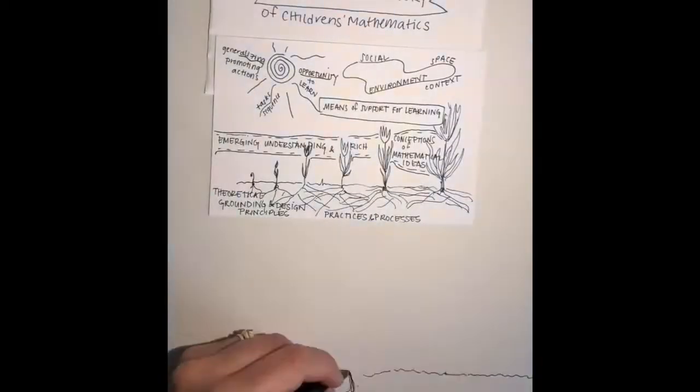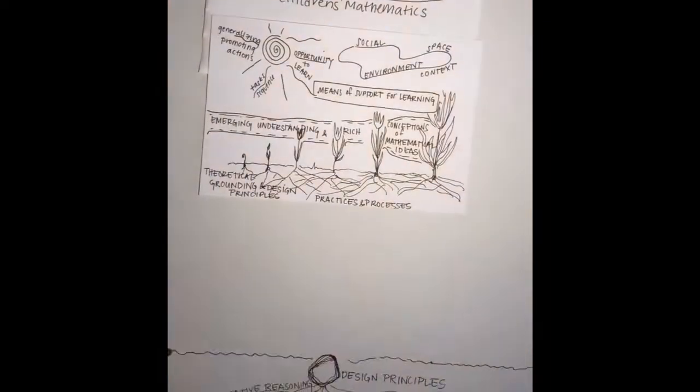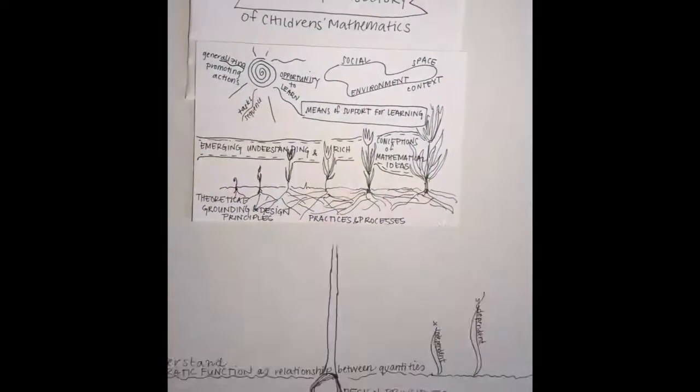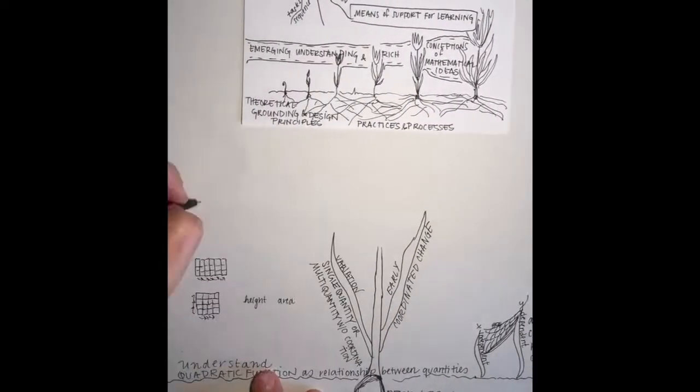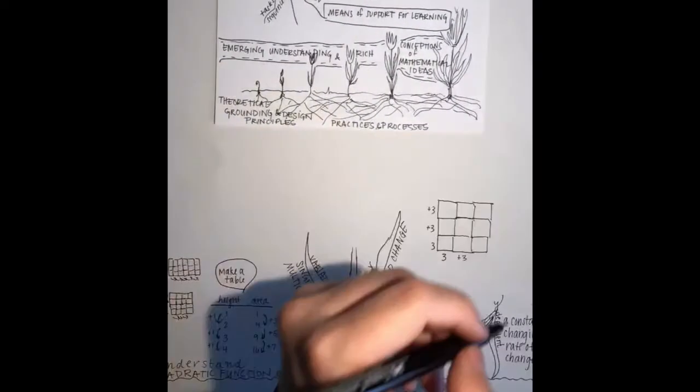I created a visual imagery for creating a learning trajectory of children's mathematics, which is both a theoretically grounded and empirically based model of children's emerging understandings of rich conceptions of mathematical ideas.